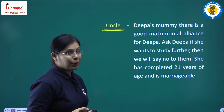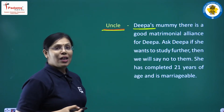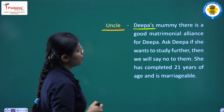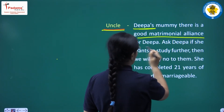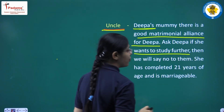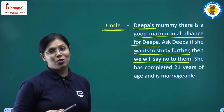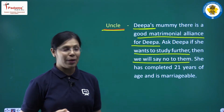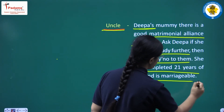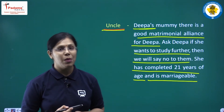There was an uncle in the family talking to Deepa's mother. He said, 'Deepa's mummy, there is a good matrimonial alliance for Deepa. Ask Deepa — if she wants to study further, we will say no to them. She has completed 21 years of age and is marriageable.' So the uncle was discussing a marriage proposal for Deepa with her mother.